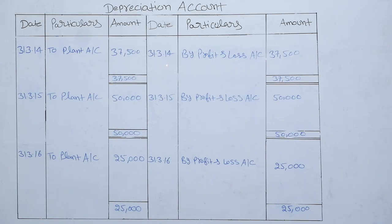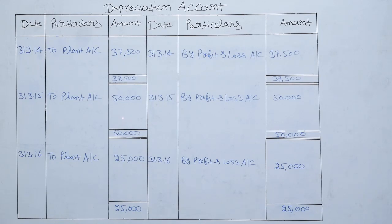On 31st March 2014, by profit and loss account Rs 37,500. In the next year, plant account depreciation balance is Rs 50,000, as there is no adjustment in the second year, so we will charge depreciation for the entire year. To plant account Rs 50,000. By profit and loss account Rs 50,000.